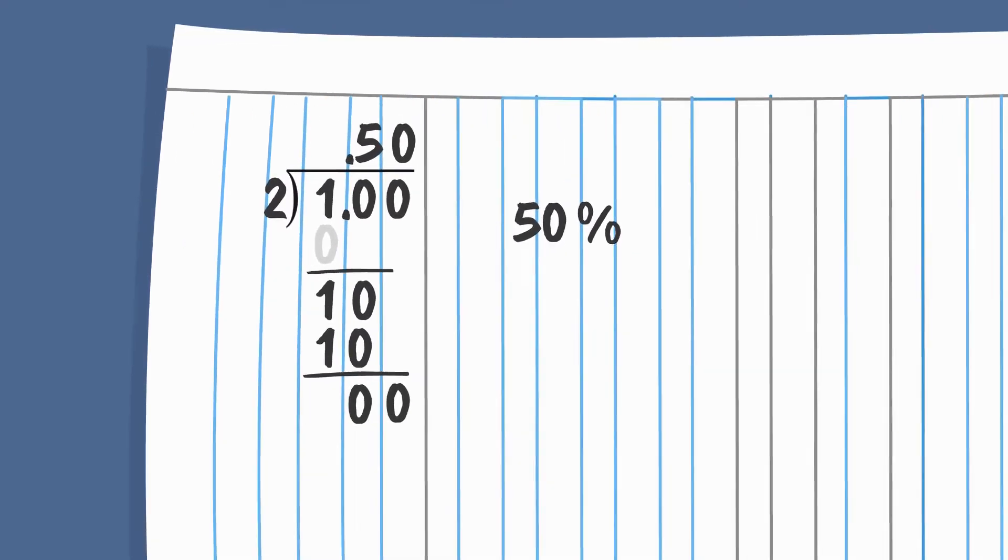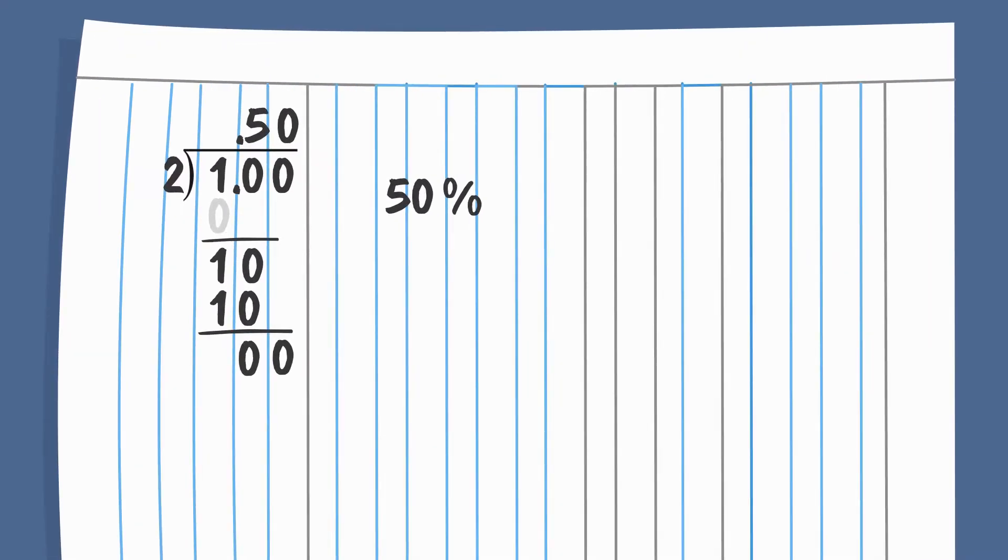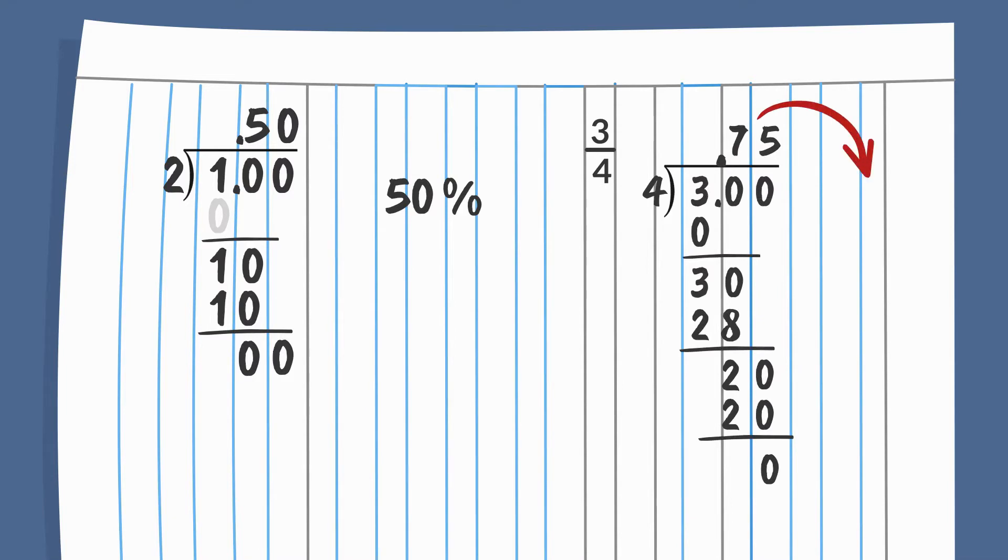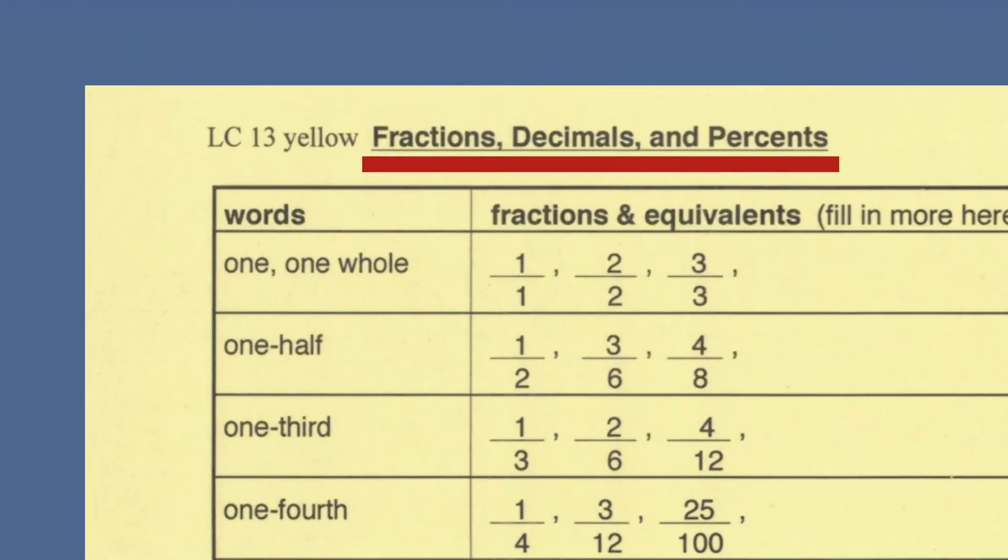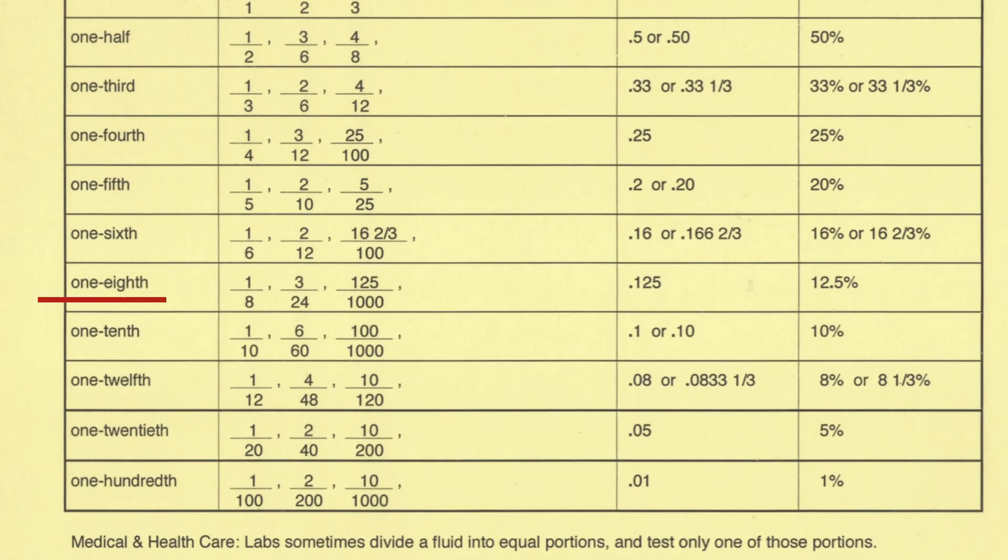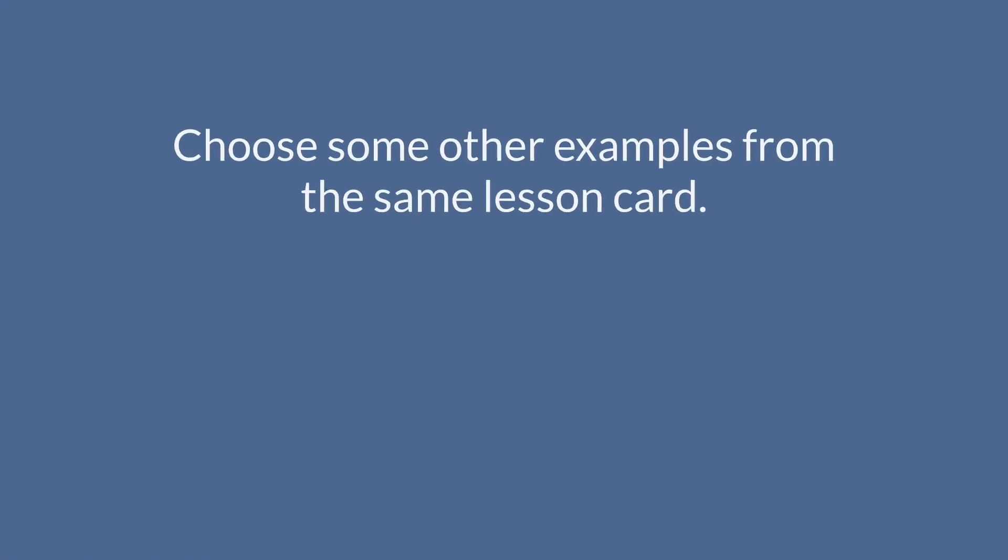In a moment, you should pause while you try more examples on your lined paper, turned sideways. For each fraction you choose, do the division problem, then convert the decimal answer to a percent by moving the decimal point two spaces to the right. You should choose fractions from the lesson card, titled fractions, decimals, and percents, and check your answers using that lesson card. Start with one-eighth. Practice converting one-eighth to .125, then to 12.5%. Next, choose some other examples from the same lesson card. Come back when you are ready to continue.